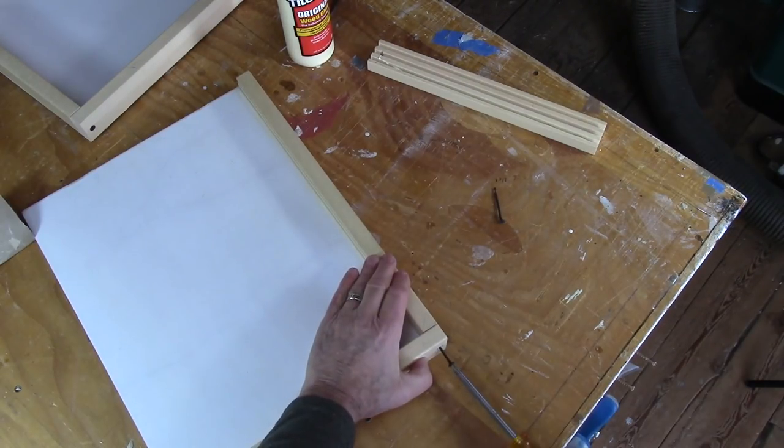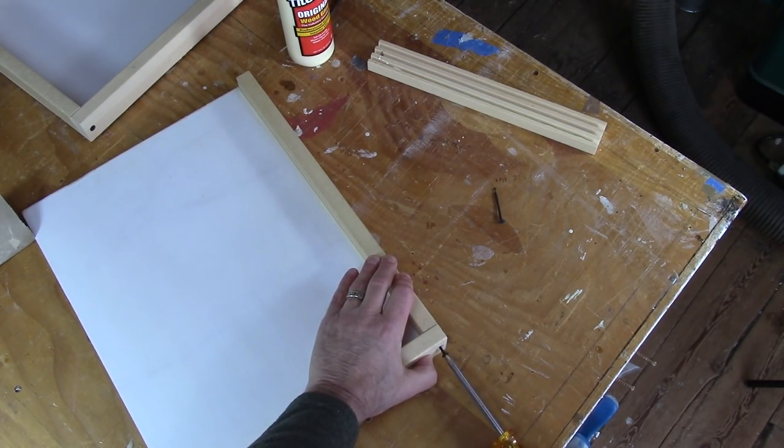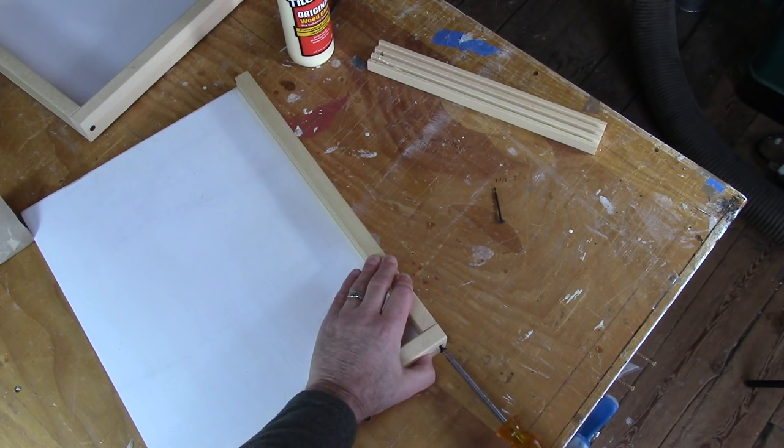The three pieces get put together. Each joint gets one drywall screw.